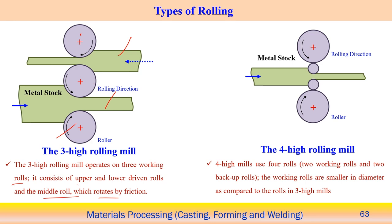Reduction is possible using this three-high setup. We can also have four-high rolling mills. In this case, there are large backup rolls and smaller working rolls. The smaller rolls contribute to shaping the material, while the other two are supporting or backup rolls. Four-high mills use two working rolls and two backup rolls. The backup rolls stabilize the process and increase rigidity, while the working rolls are usually smaller in diameter compared to three-high rolls.